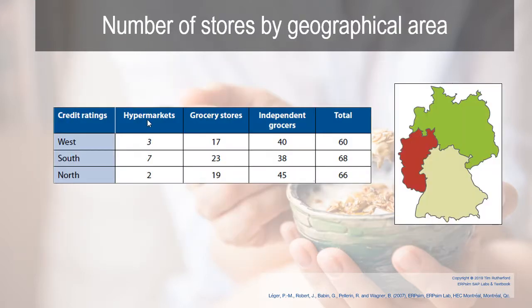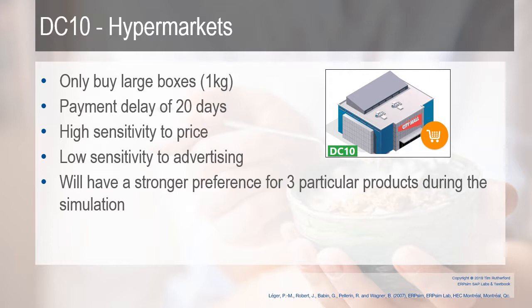Looking at the distribution channels where you're selling: DC 10 is the hypermarket — a place where they sell large quantities. Hypermarkets only buy large boxes. They have a payment delay of 20 days, a high sensitivity to price, and a low sensitivity to advertising, so DC 10 is not going to respond as much to your marketing. Within the entire manufacturing game, DC 10 will have a stronger preference for three particular products during the simulation, and it's up to you and your analytics to figure out what those are.